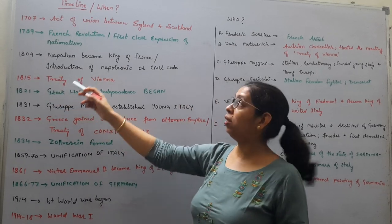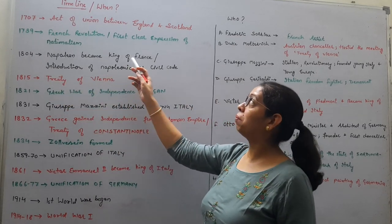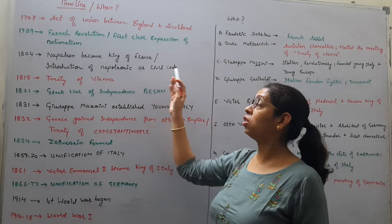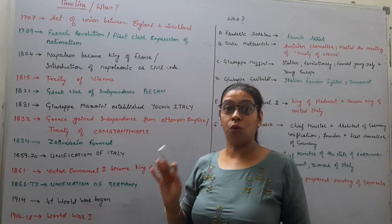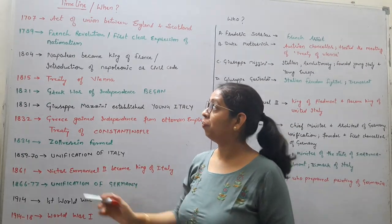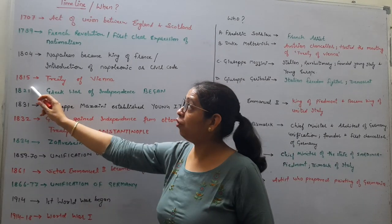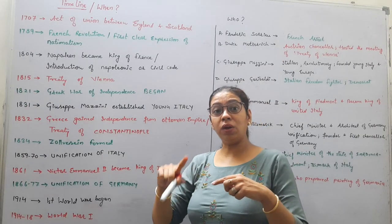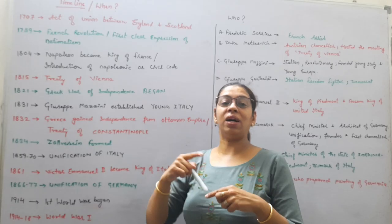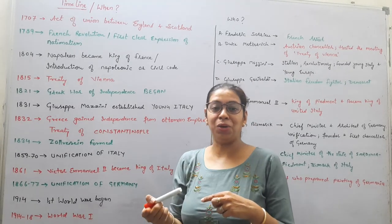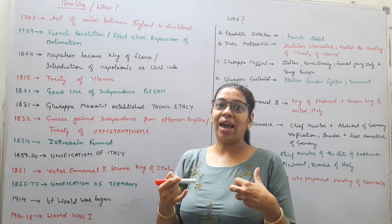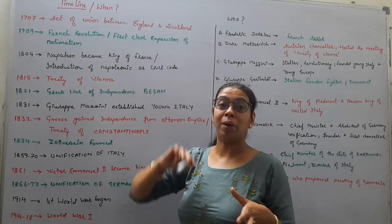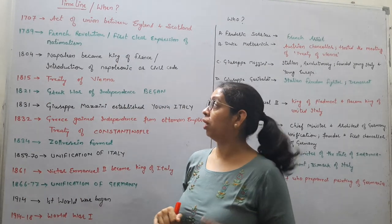1804 — you all know Napoleon became king of France and introduced the Napoleonic Civil Code, which is very famous. 1815 — the Treaty of Vienna, through which conservatives took up power again and undid all the changes introduced by Napoleon.